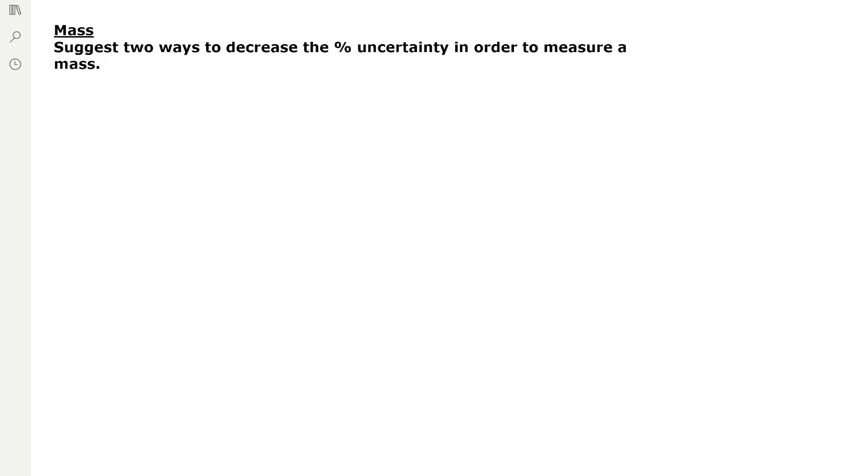So to decrease the uncertainty, we would want to use a more accurate mass balance, which measures, for example, to three decimal places rather than two decimal places. And then to increase the measurement on the bottom, we would measure a larger mass.